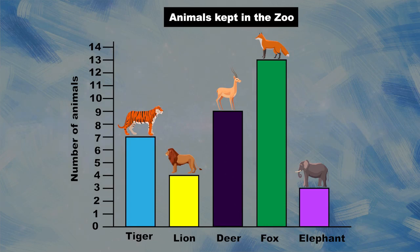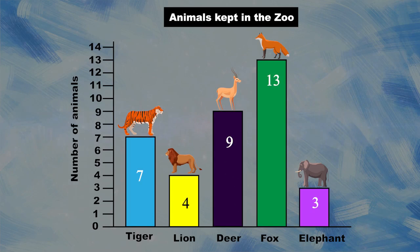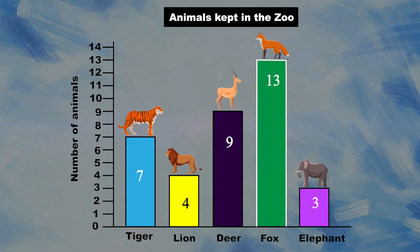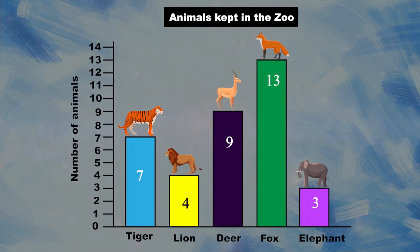Now another question: which animal is maximum in number? Let's see the bar graph again. The bar that is tallest is our answer, and in this diagram the tallest bar belongs to fox — so fox is maximum in number in this zoo.